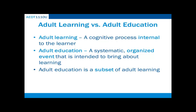Although the terms are often used interchangeably, adult learning is typically regarded as a cognitive process that is internal to the learner which can occur at any time, whereas adult education is a systematic, organized event that is intended to bring about learning. Adult education can be thought of as a subset of adult learning, as learning by adults occurs both within the framework of adult education and also beyond it.